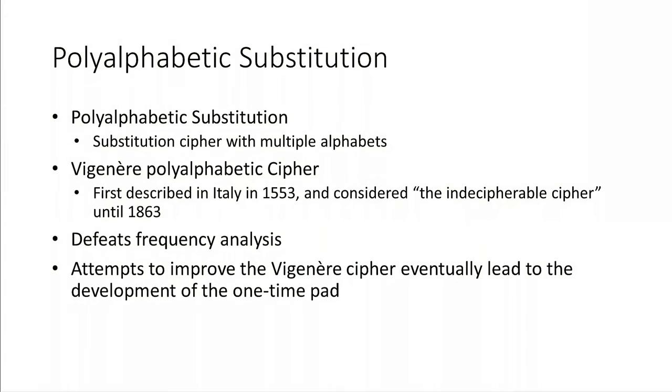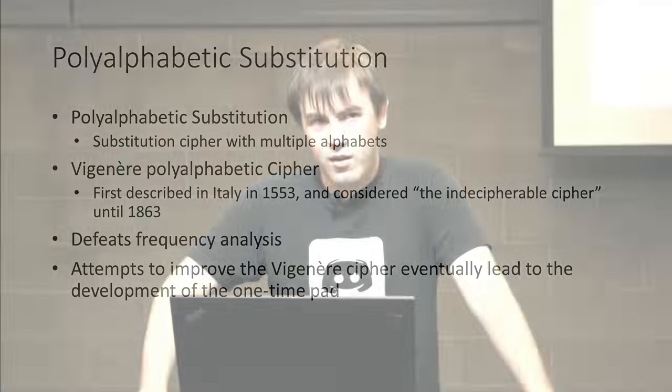Now let's talk about more advanced encryption: the polyalphabetic substitution cipher, which is a substitution cipher made up of multiple alphabets. Instead of using a single alphabet, what if we use more than one at the same time? In a polyalphabetic cipher, the same plaintext letter — like E — can be represented by different letters or symbols depending on its position in the text you want to encrypt.